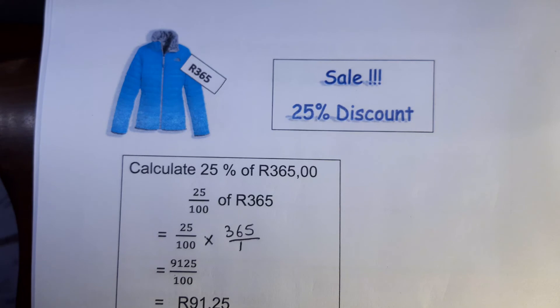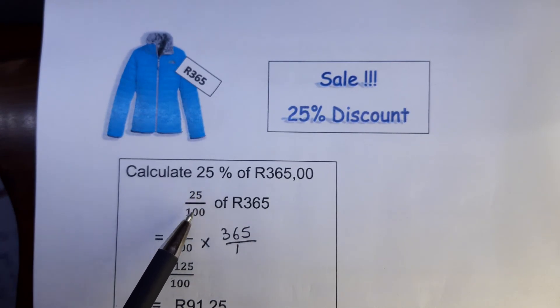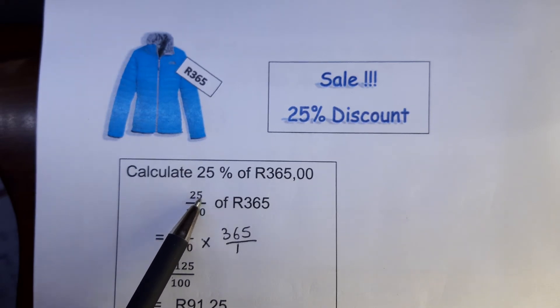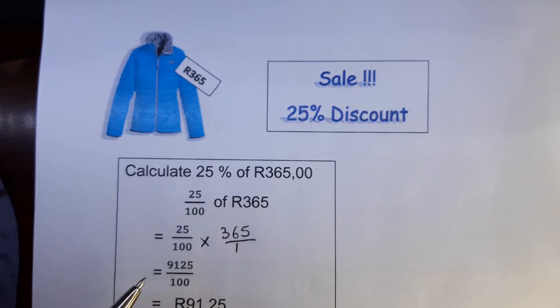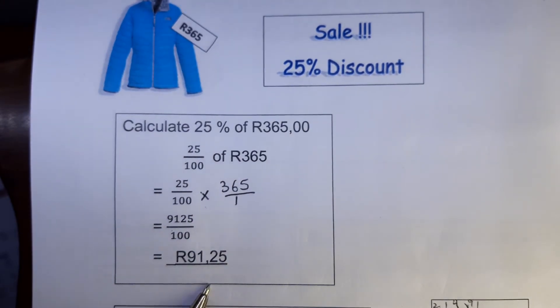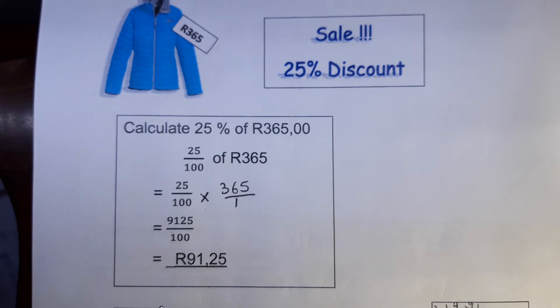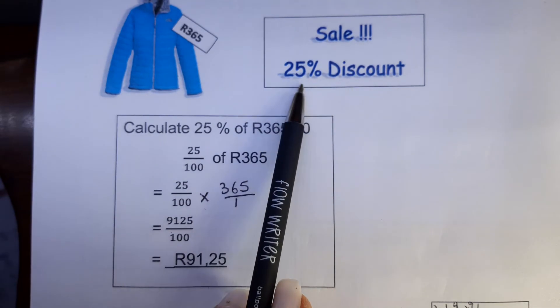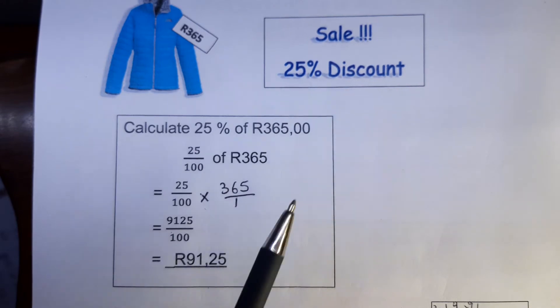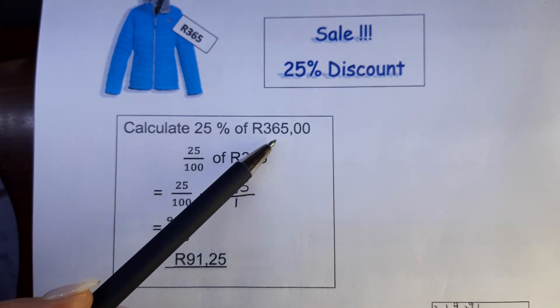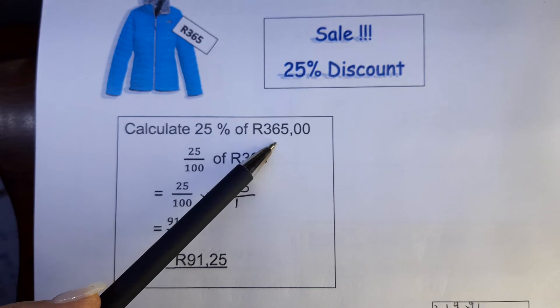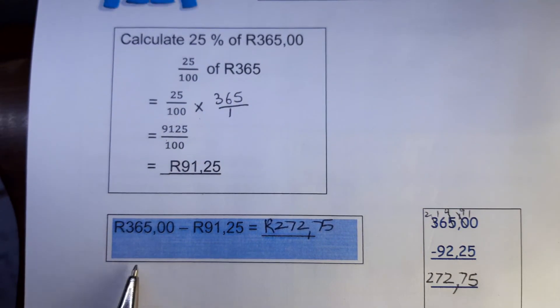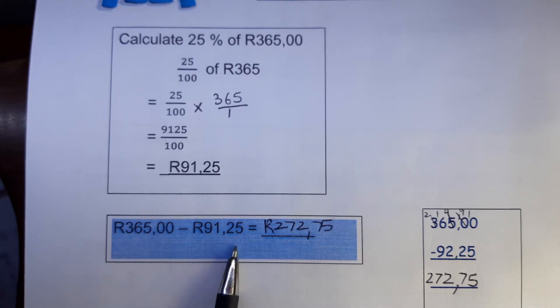When you have on a sale and there's 25% discount, you first calculate what is 25 out of a hundred of 365. In the place of 'of' you write times, and that gives you 91 rand and 25 cents. But you're not done, they ask you how much will you pay if you get 25% discount.